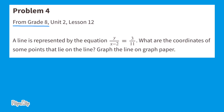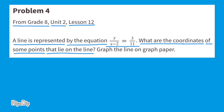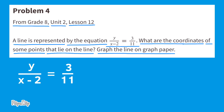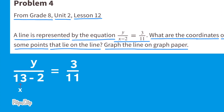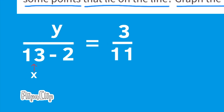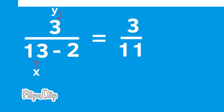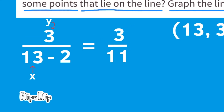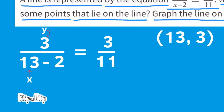Problem number 4, from 8th grade, Unit 2, Lesson 12. A line is represented by the equation y over (x minus 2) equals 3/11. What are the coordinates of some points that lie on the line? This equation tells you the value for y: when x is 13, y equals 3, because 13 minus 2 equals 11. So when x is 13, y is 3 — our first ordered pair is (13, 3).